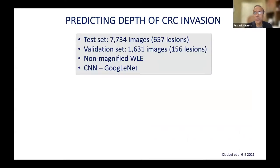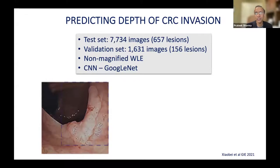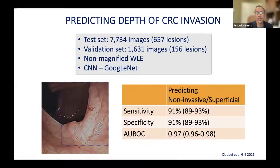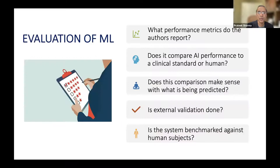Taking a step further: if you do see a cancer within the colon wall, can you predict how deep it's going? Only if it's superficial do we resect it endoscopically; deep invasion into the muscle layer means the patient needs surgery. Just one month ago, a study was published in an endoscopy journal using a test set of more than 7,000 images, looking at non-magnified white light imaging to predict sensitivity and specificity of non-invasive versus superficially invasive cancer — identifying lesions that may be resectable during the procedure.